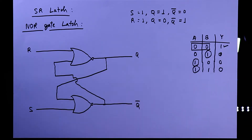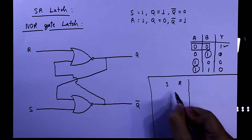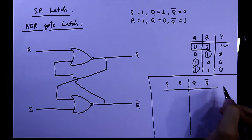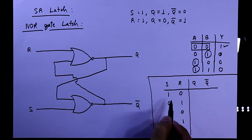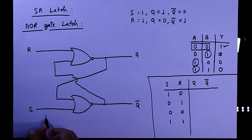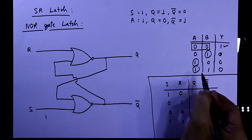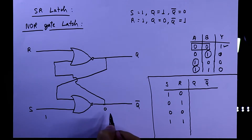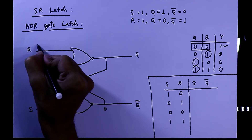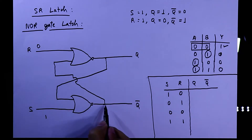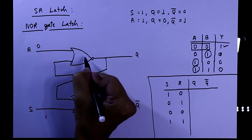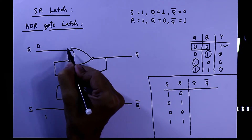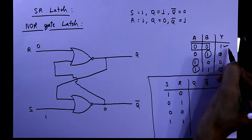The truth table of the SR latch using NOR gates has four cases. For the first case, S=1 and R=0. Since any input of 1 gives output 0, the first NOR gate outputs 0. This 0 connects to the second input of the first NOR gate, and when both inputs are 0, the output will be 1.